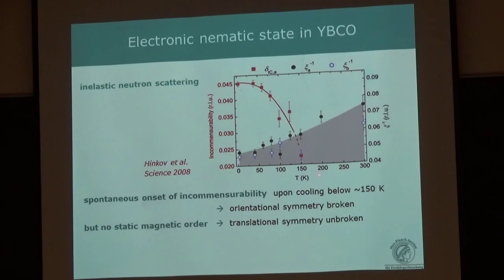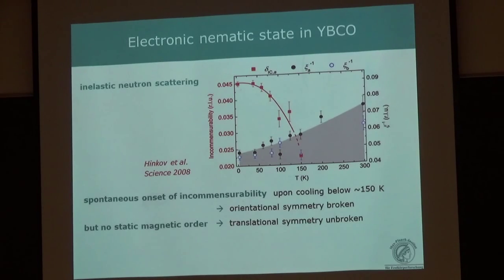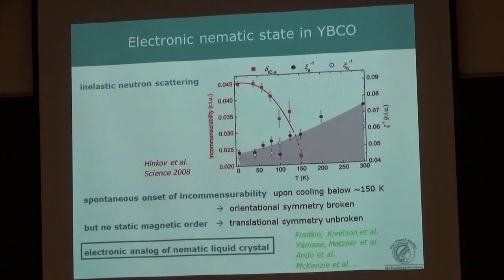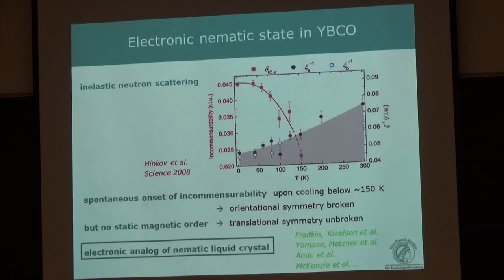So in the regime between 150 and 30 K, you're in a state in which the orientational symmetry is broken but the translational symmetry is unbroken. This had been predicted by Steve Kivelson and others before these measurements—they called it nematic, similar to the nematic phase in complex organic fluids where all molecules orient in the same direction even without translational crystalline order. However, one caveat: this material is actually slightly orthorhombic, so A and B axes differ slightly, though not enough to be the driving force of this phase-transition-like behavior.